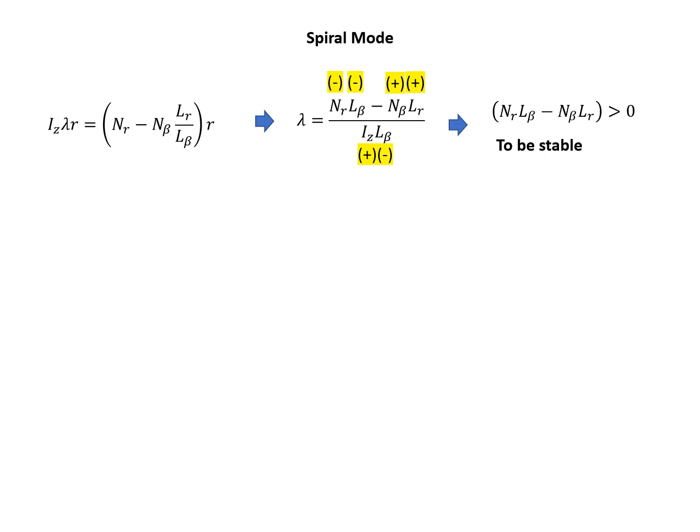Actually, slight instability here for the spiral mode has no problem, because even a human pilot can sense the onset because it is a very slow mode. An autopilot has no problem in correcting this. Even if it's slightly unstable, still there's no problem because the time it takes to develop is very big.